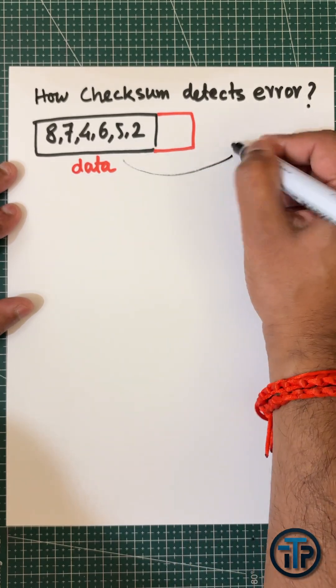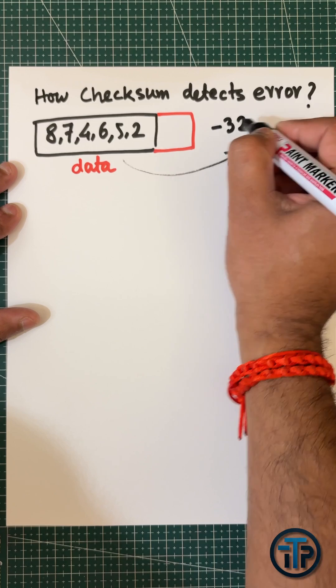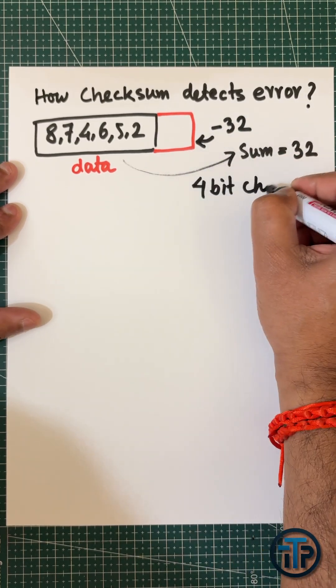To find the checksum, first calculate the sum, which is 32. The checksum will be -32, so that at the receiver side the total sum will be zero.